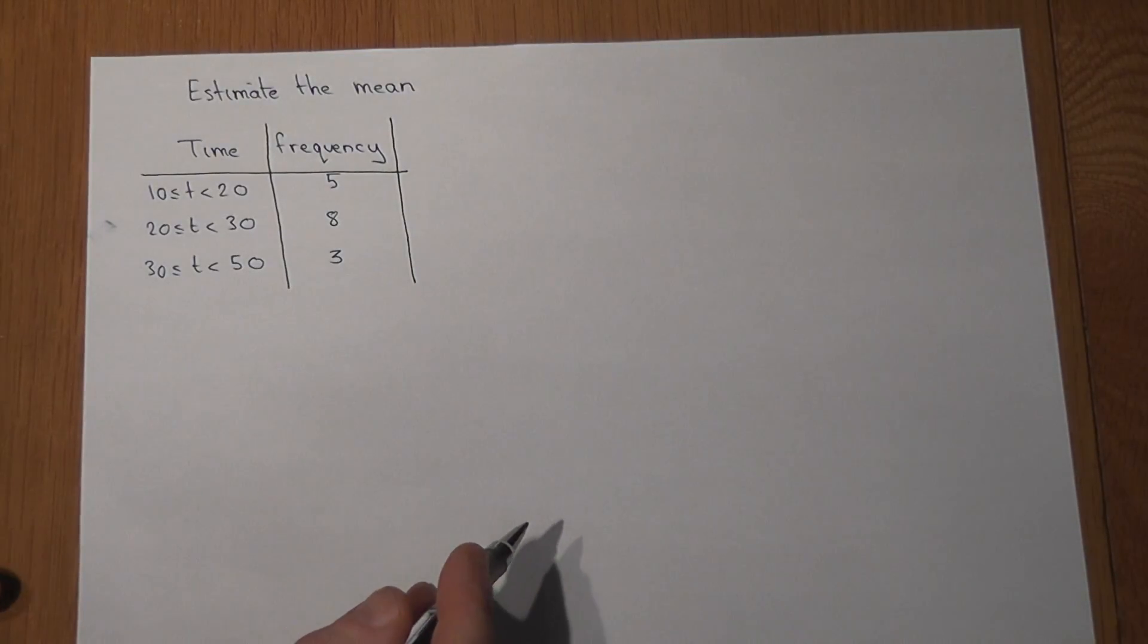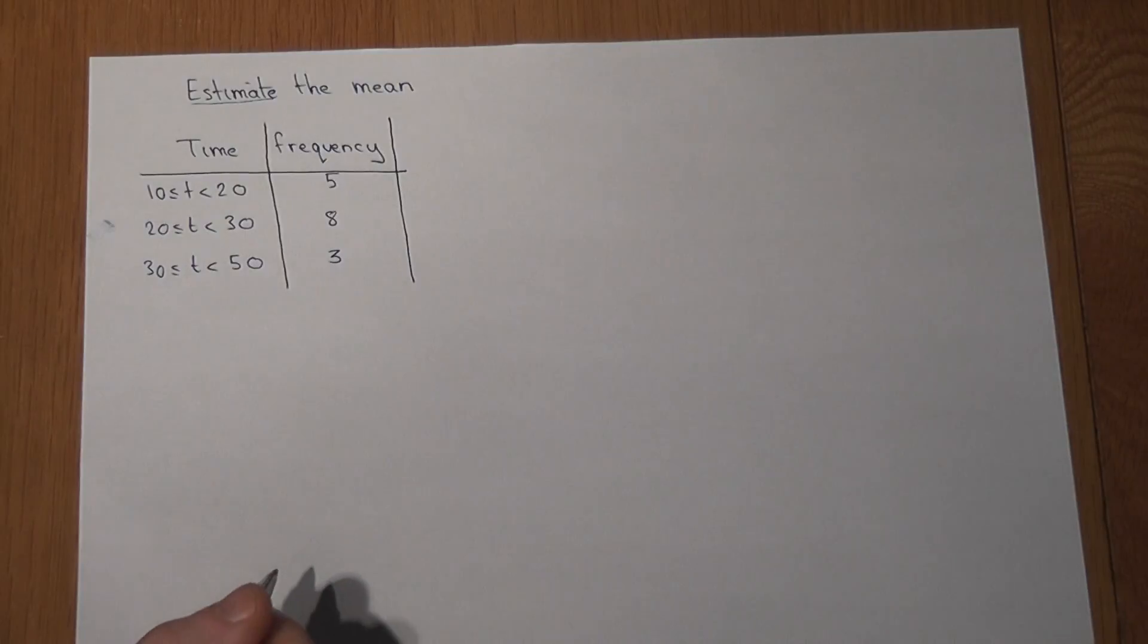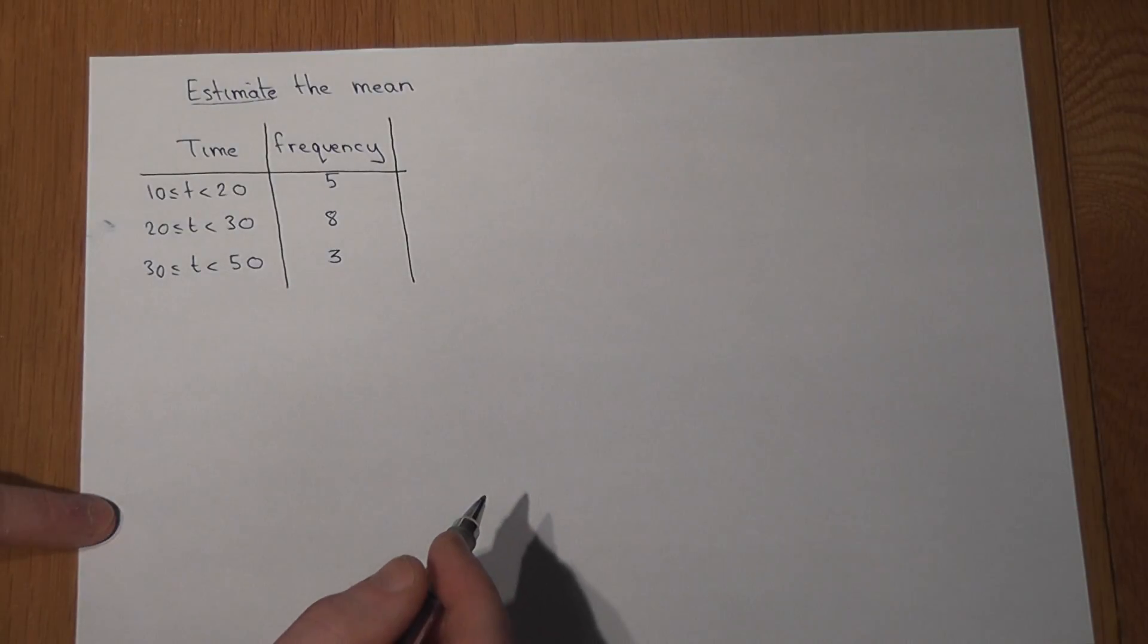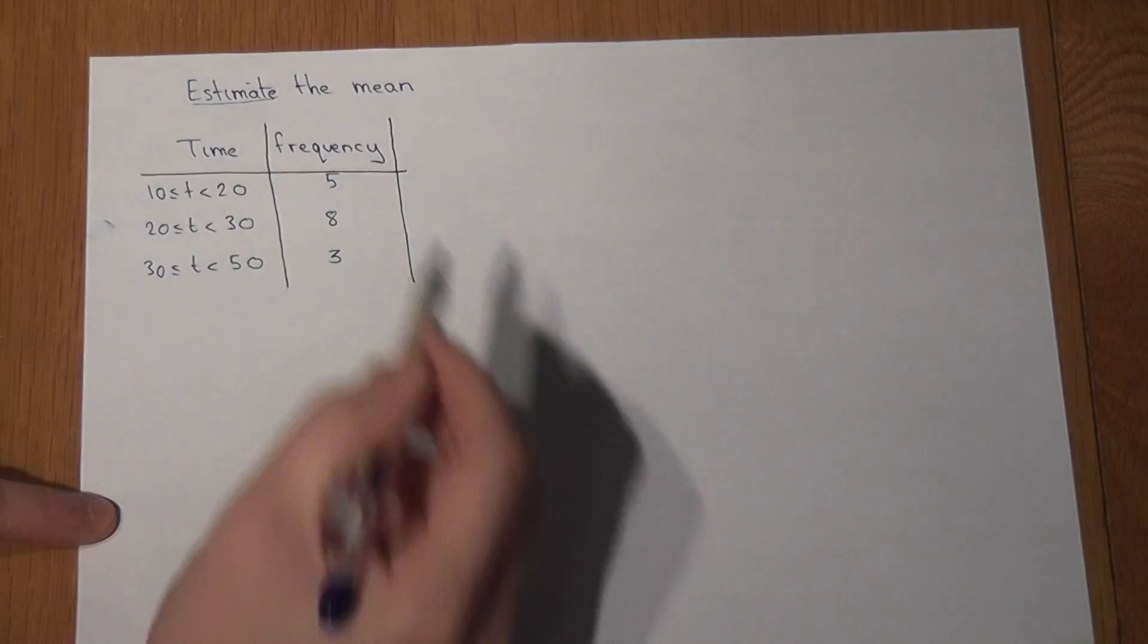This video reviews the quick calculation to estimate the mean given some form of a grouped frequency table. In this table, some people did a race and the time taken was recorded. Five people took between 10 and 20 seconds, eight people took between 20 and 30 seconds.